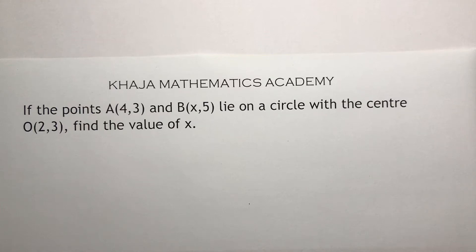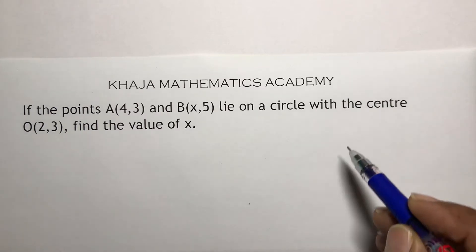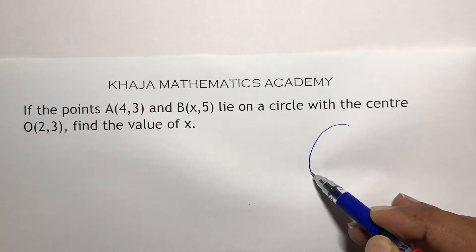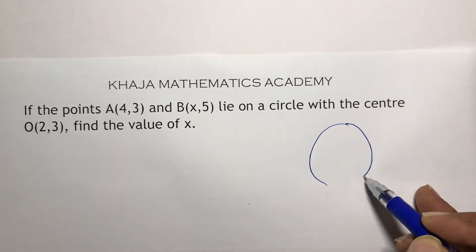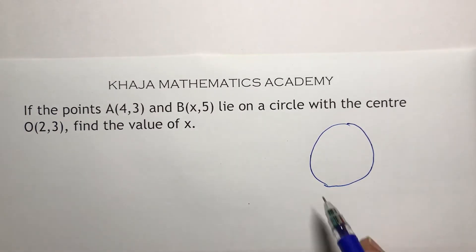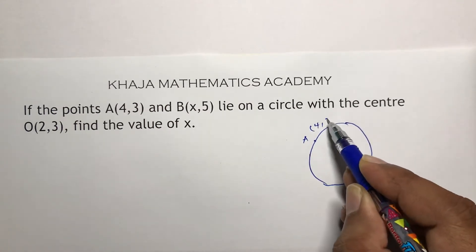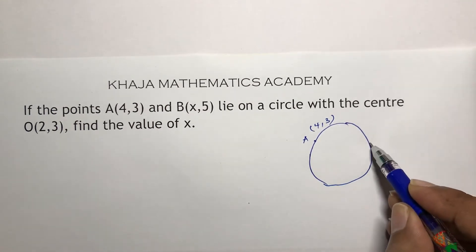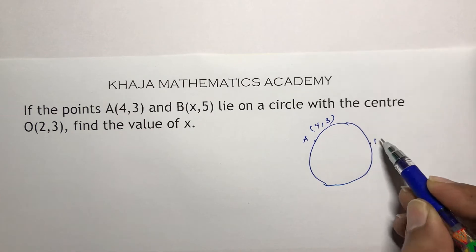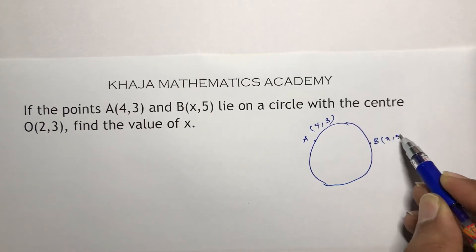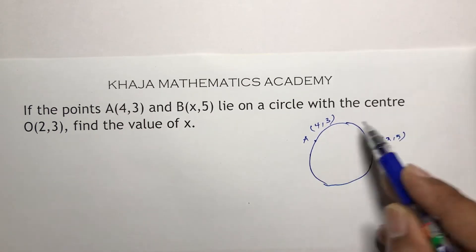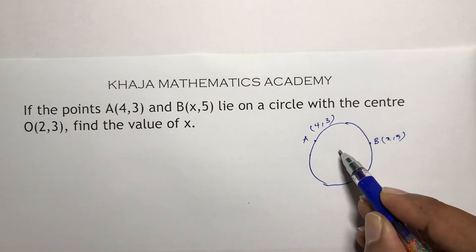If the points (4, 3) and (x, 5) lie on a circle with center (2, 3), find the value of x. Here, point A is (4, 3) and point B is (x, 5). These two points lie on the circle with center O at (2, 3).